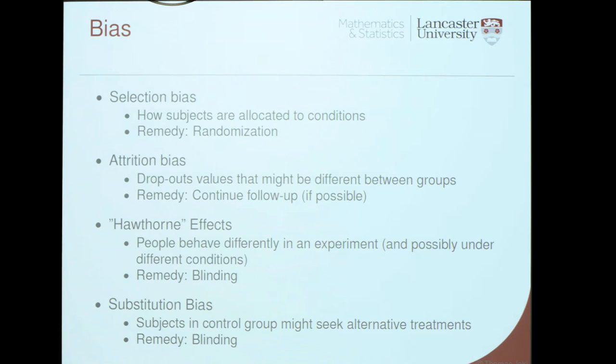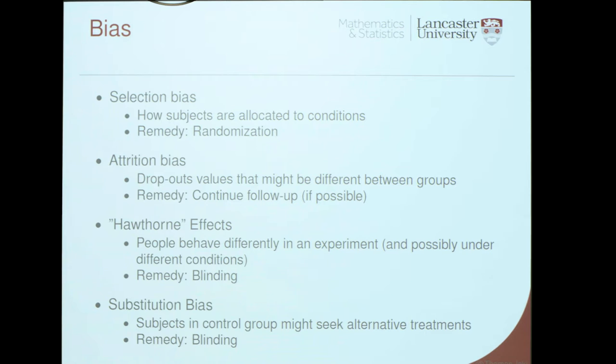The second issue is attrition bias, which comes from two treatments that work very differently. If your experimental treatment works fantastically well and the control doesn't, patients on the experimental treatment will stay on it while patients on the control will probably drop out, introducing a bias. To reduce attrition bias, try to follow patients even if they've decided to stop being part of the study — ask them, make sure you're allowed to use the follow-up data if at all possible.